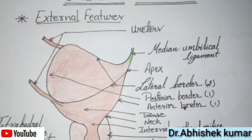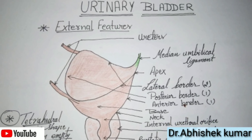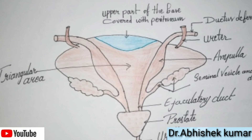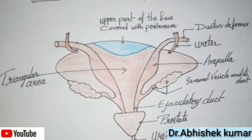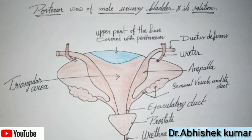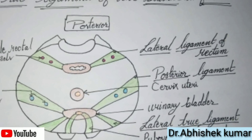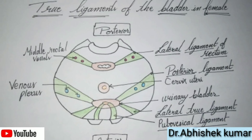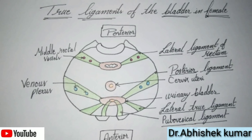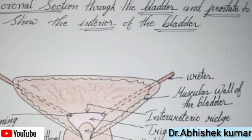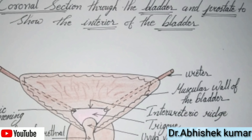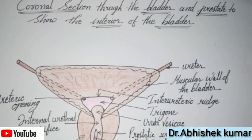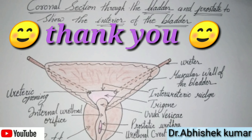Today we have seen the external features of the urinary bladder, then the posterior view of the male urinary bladder and its relations, then the true ligaments of the bladder in the female, and finally the coronal section through the bladder and prostate showing the interior of the bladder. Thank you very much.